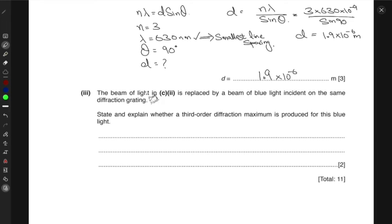Now, the beam of light in C2 is replaced by a beam of blue light incident on the same diffraction grating. State and explain whether a third order diffraction maximum is produced for this blue light.